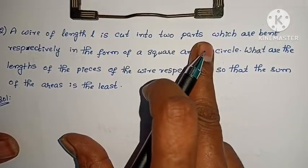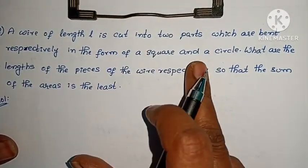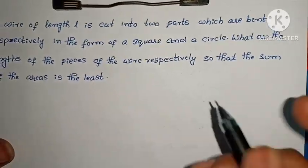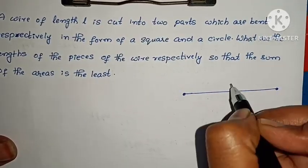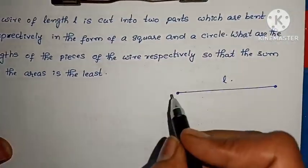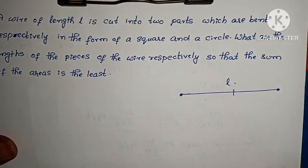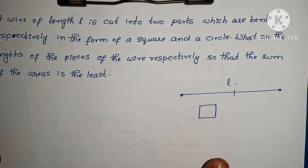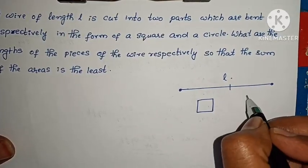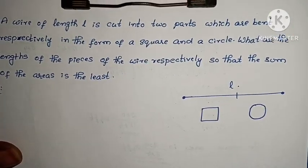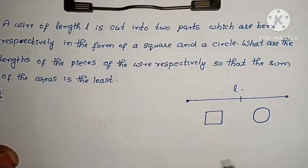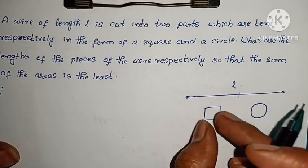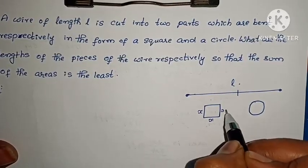The second question: a wire of length L is cut into two parts which are bent respectively in the form of a square and a circle. What are the lengths of the pieces of the wire so that the sum of the areas is the least? The wire of length L is cut into two unequal parts — one part forms a square shape, and the other forms a circle.